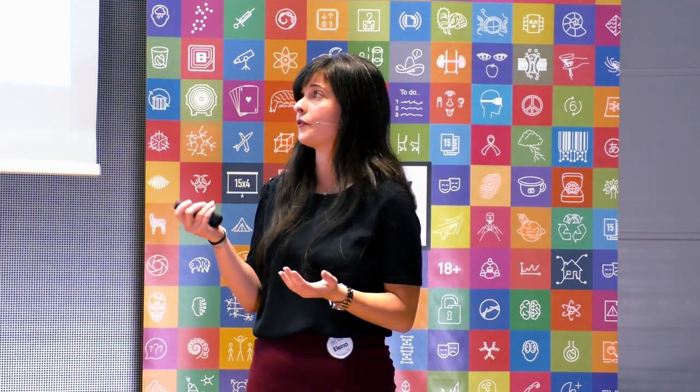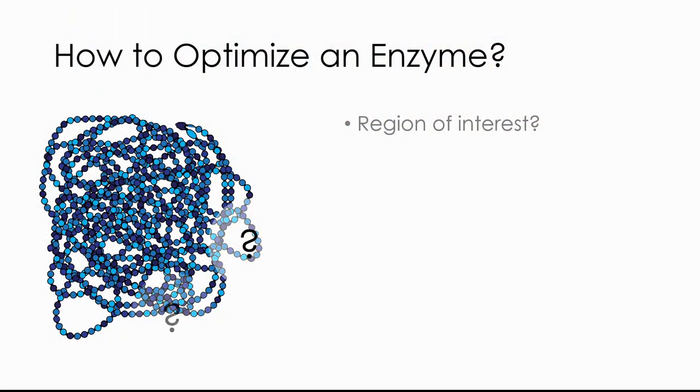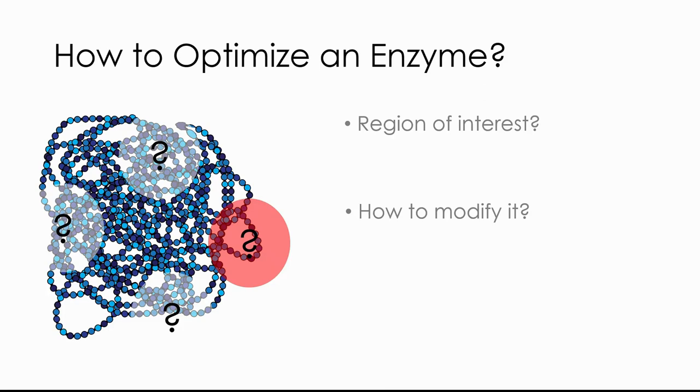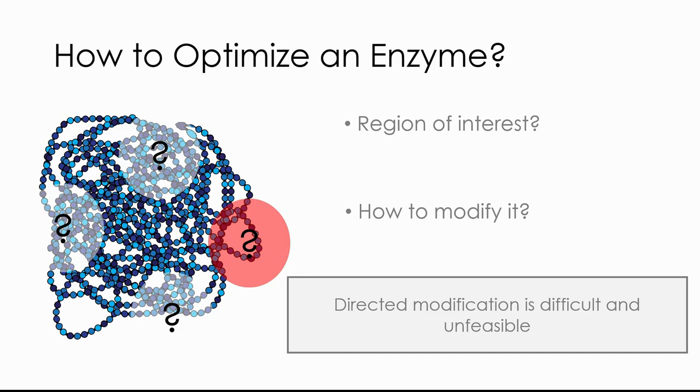However, as mentioned before, the enzyme is a very complex 3D structure, so it's kind of difficult to understand which of these regions is actually the one responsible for making the reaction happen in a water environment. Which of these regions should we actually focus on to make it change? And even assuming we know which of these regions is the most important one, we don't really know in which way we should modify it. We have a sequence of these building blocks, but we don't really know how to modify them to obtain the final result that we want, to make it work in different environments. So for this reason, the directed modification of enzymes is very difficult and unfeasible, was not achieved, and was not achieved by anybody before Professor Arnold brought something new to the field.